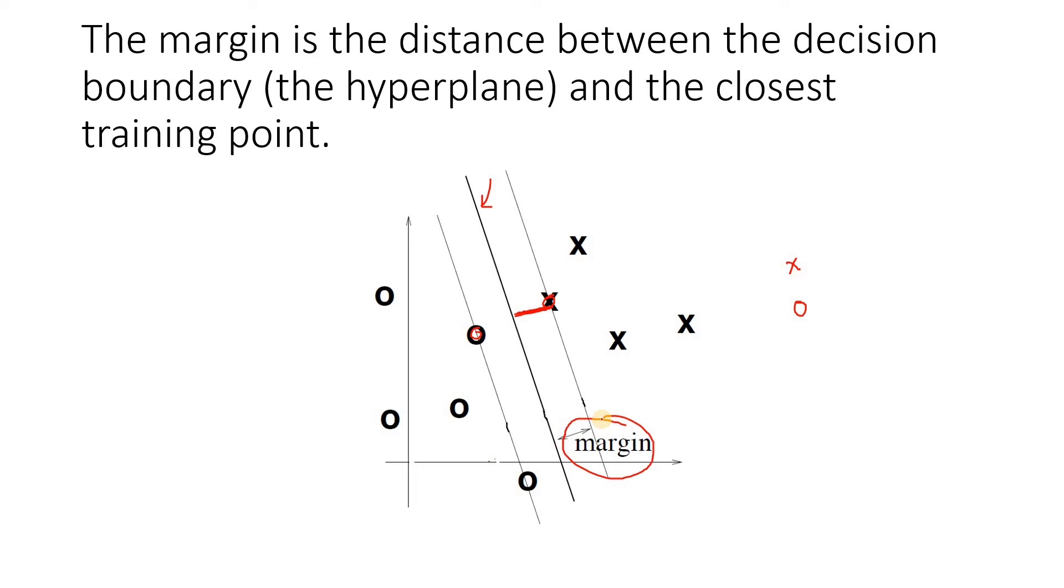Now the question comes: how can we calculate margin? Very simple. You already know how to calculate the distance between one data point and the hyperplane from the previous video discussion. So what you do is calculate all possible distances between each training data point and the hyperplane, and then take the minimum one. That will be basically my margin.